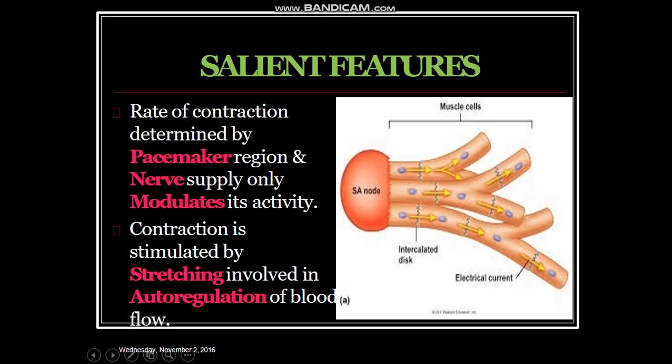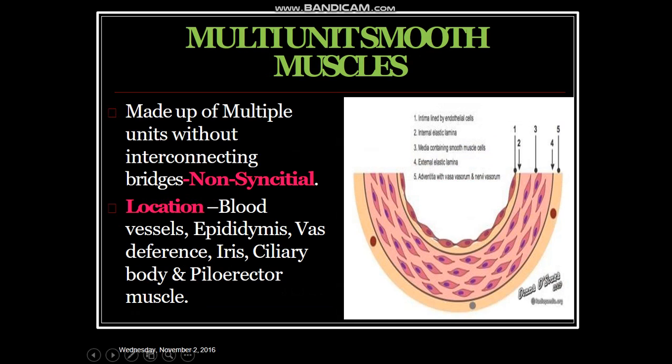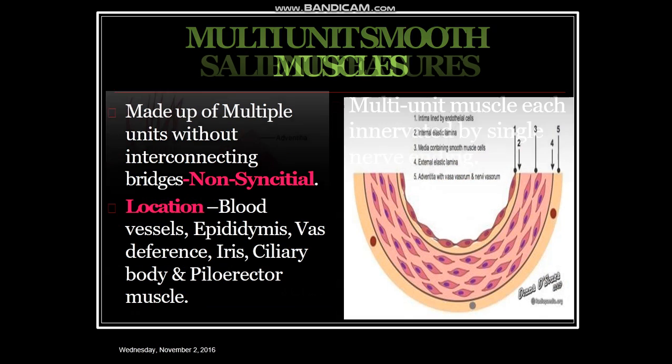Multi-unit smooth muscle is made up of multiple units without interconnecting bridges — non-syncytial. The fibers contract singularly, not as a unit. Locations include blood vessels, epididymis, vas deferens, iris, ciliary body, and piloerecti muscles. This is the multi-unit smooth muscle with these structures as its examples.